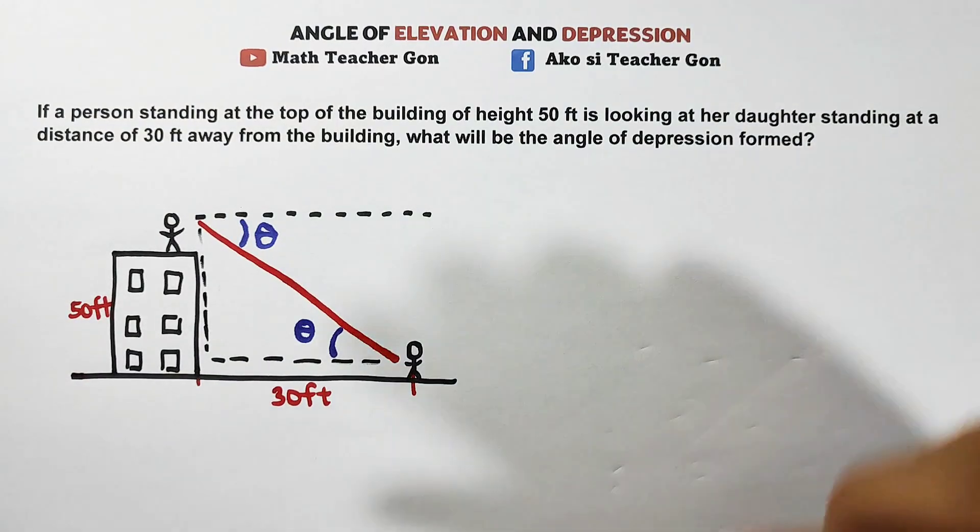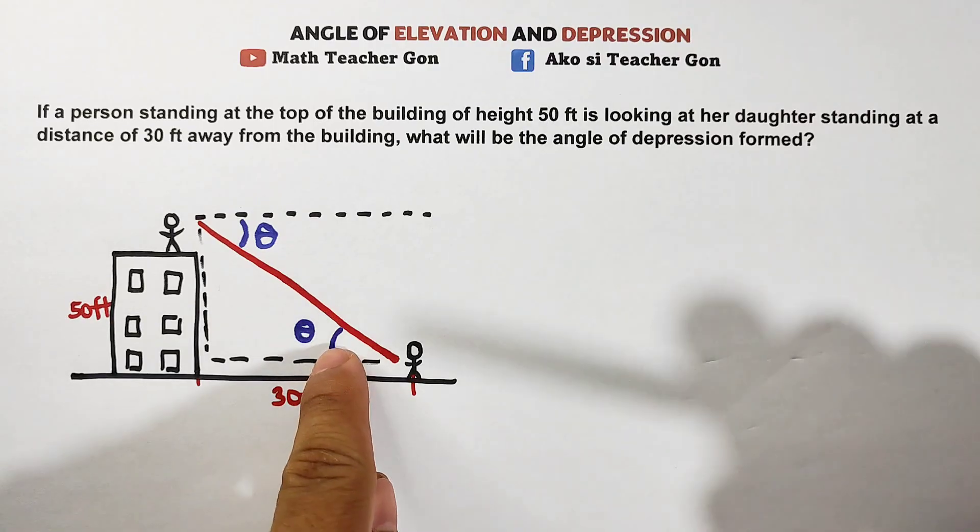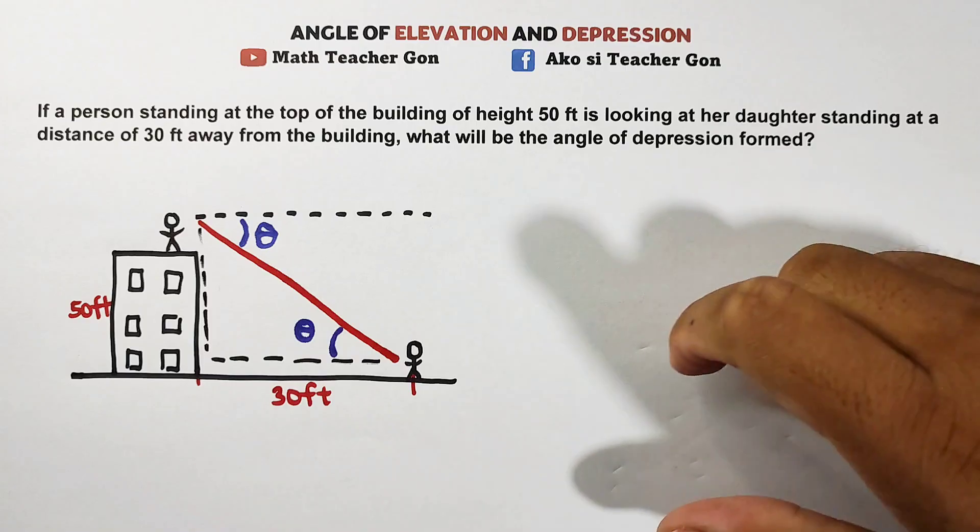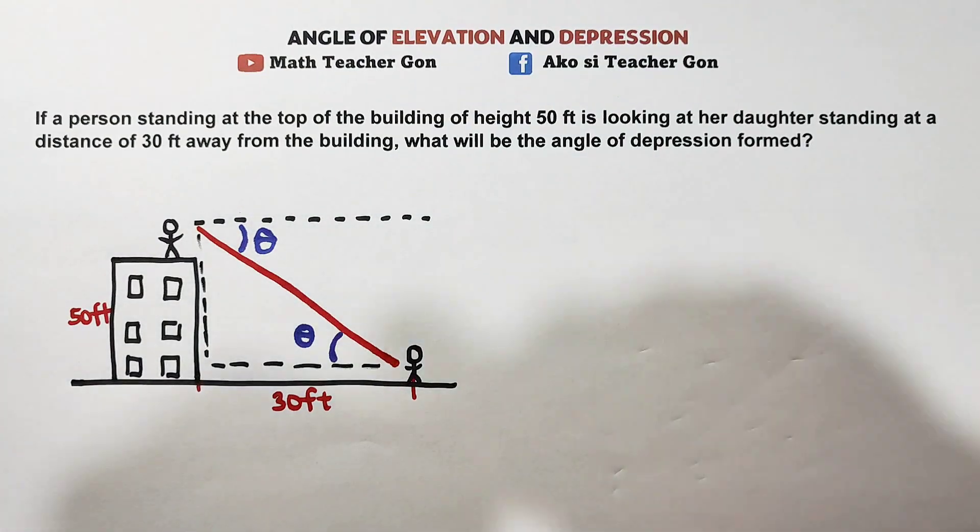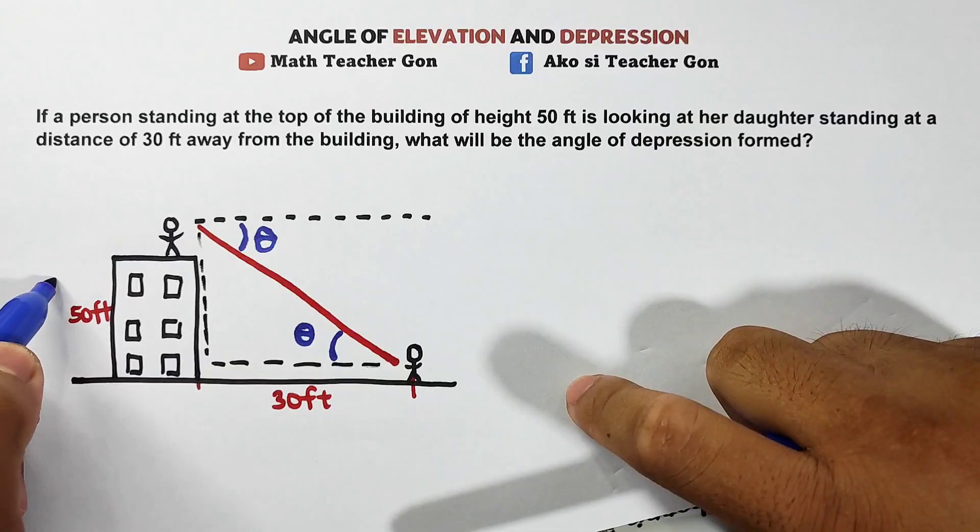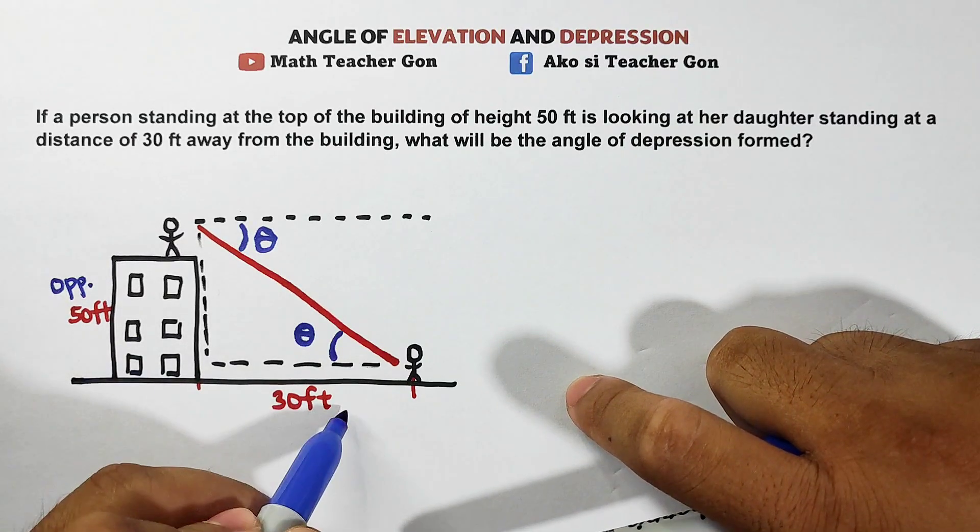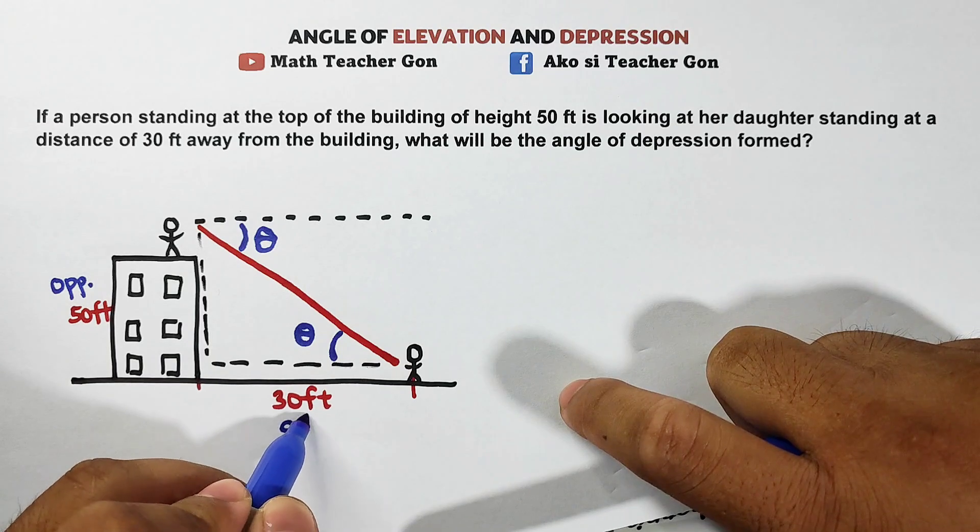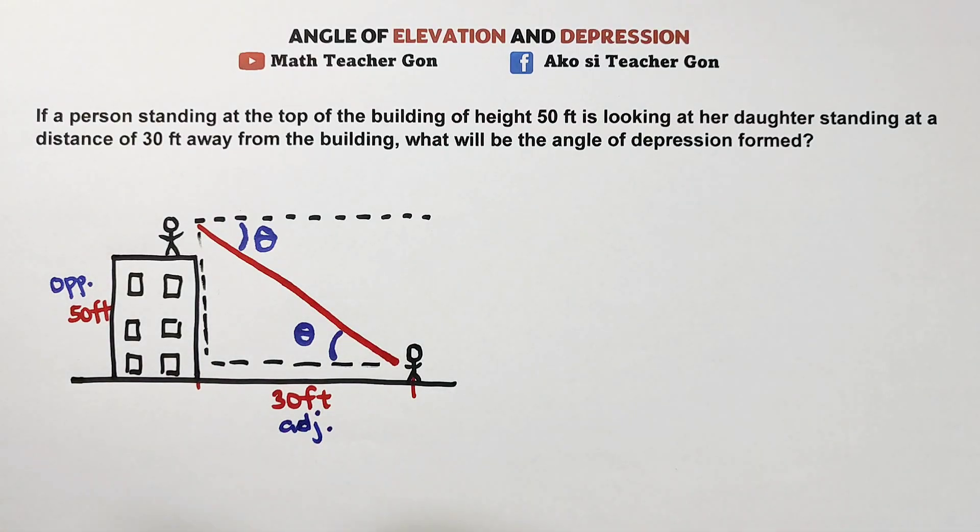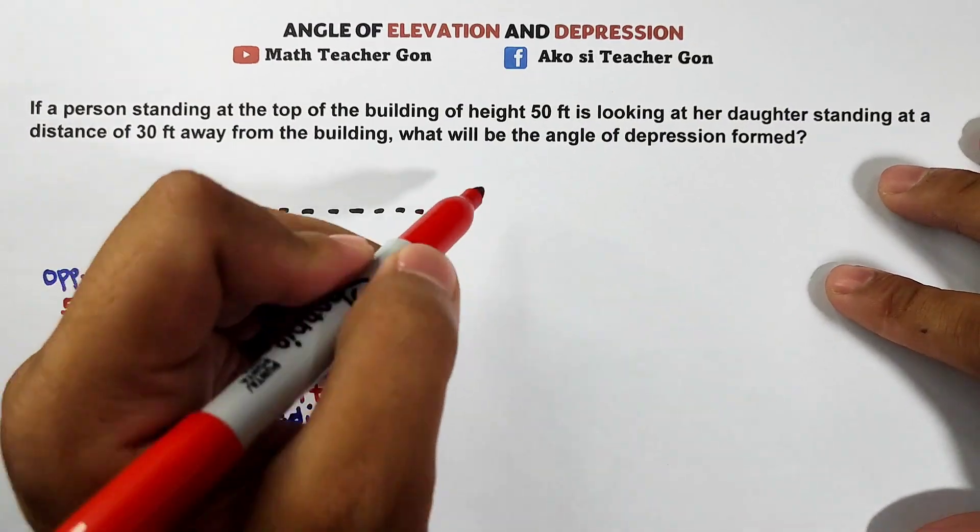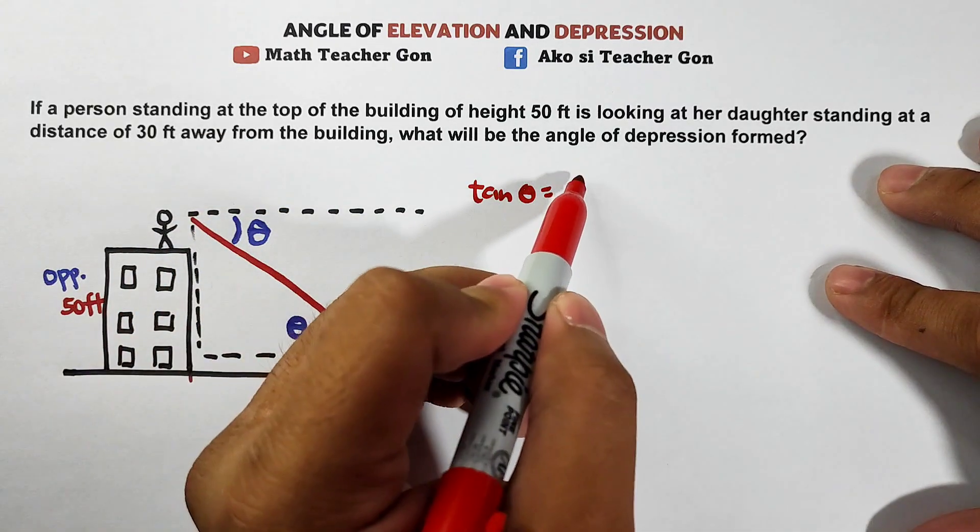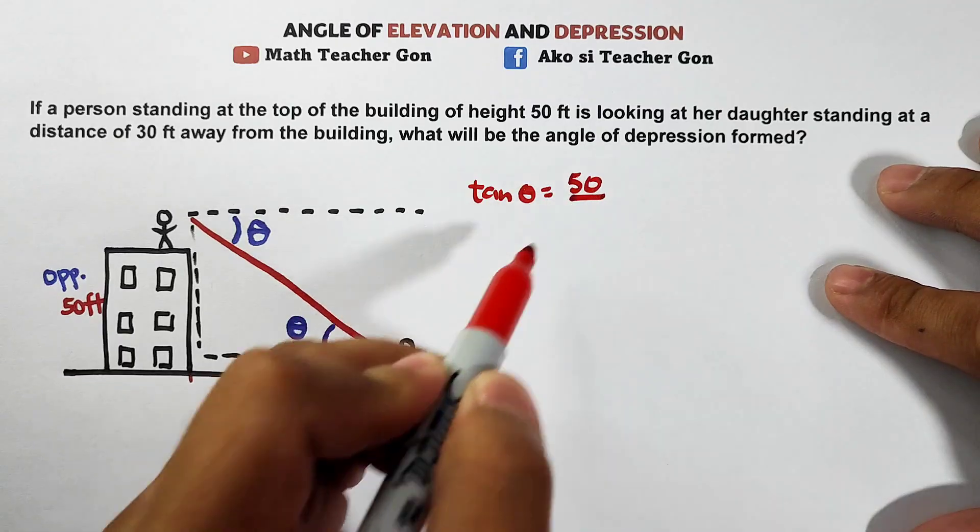Now with respect to your angle theta, let's focus here. Angle theta, this side is opposite. I'm running out of marker. This is opposite. This is now your adjacent side. So it seems we're all using tangent. Tangent is what we'll use here. We will use tangent theta. So your opposite is 50 over 30.